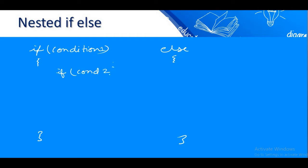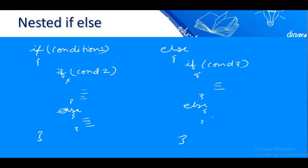Suppose condition 1 is the outer if, and inside it there is condition 2 with its own else block. You can write an if-else statement inside if, or inside else, or inside both. When we write an if or if-else statement inside another if or else, it is called nesting — one inside another. That is the syntax of nested if-else.